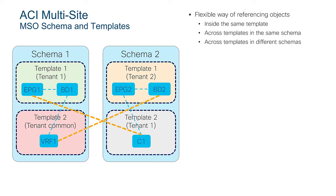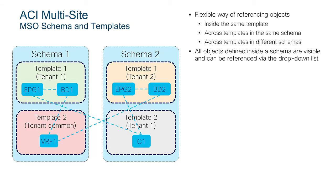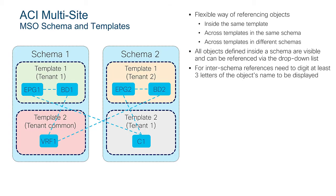Schemas and templates are just a way of organizing objects and policies to best fit your needs. One important point: all templates and objects inside the same schema can be referenced more easily because you get a dropdown list. When you associate BD1 to VRF1, you see all VRFs available for that tenant or tenant common that are defined in the same schema. If the VRF is not in the same schema, you would have to manually type the name of the VRF you want to reference — but being in a different schema doesn't prevent you from referencing it.